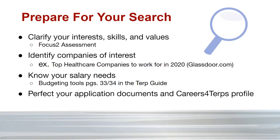Know your salary needs — not just what you need, but what you'd like. In the University Career Center TERP Guide, on pages 33 and 34, there are budgeting tools that can help you figure out the cost of living index for the city you're hoping to live in, and help you budget based on your current expenses and goals like saving, paying off loans, or making a down payment. Glassdoor is a great resource for salary research on comparable positions. Also work on perfecting your application documents — cover letters and your Careers for Terps profile.